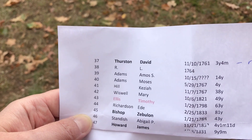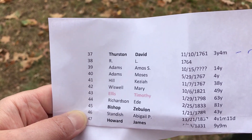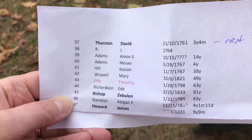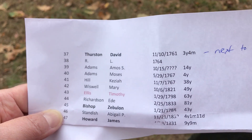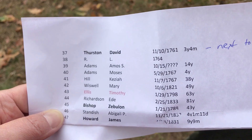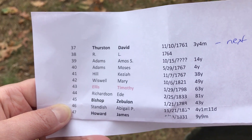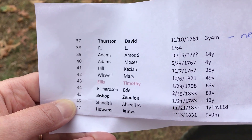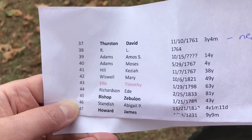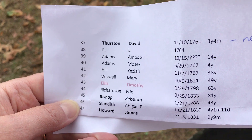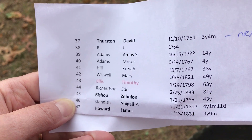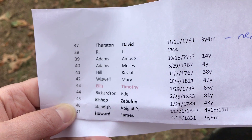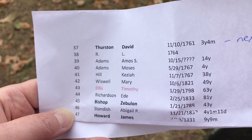Sometimes gravestones are buried, lost, or removed, so I might not be able to find it. What I did is go into my database and find the gravestones I have photographs for: David Thurston, Zebulon Bishop, and James Howard. The other people in the proximity of Timothy Ellis, I do not have gravestone photographs for, so that was a little bit of a challenge — those ones need to be photographed.